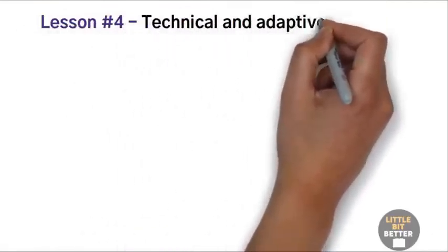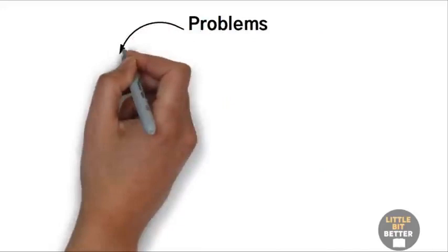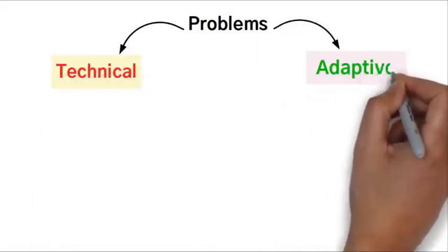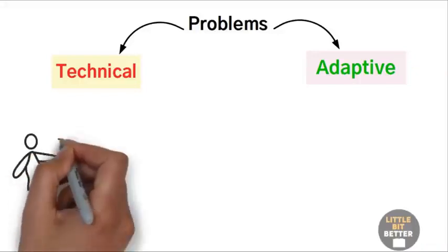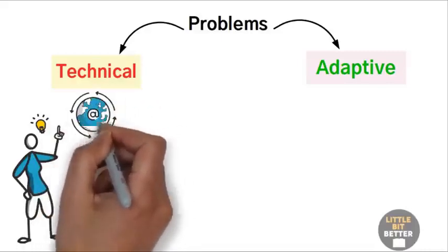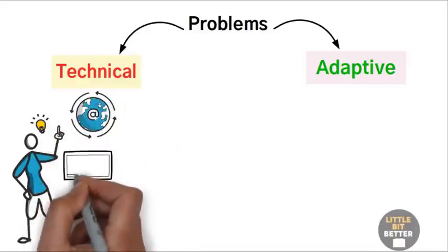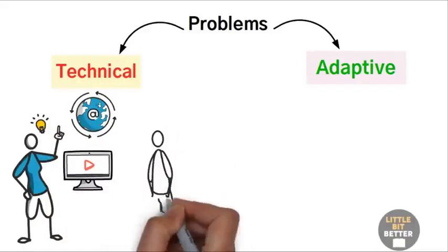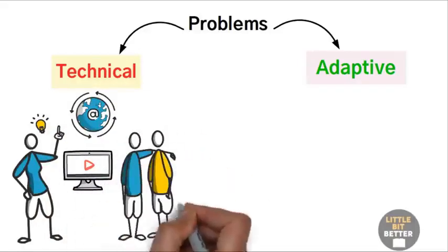Lesson number four, technical and adaptive problems. All business problems can be divided into two categories. Number one, technical problems. Number two, and adaptive problems. Technical problems are problems where the answer is already known. You just need to find out how to do it. For example, if you want to have a website for your business, there are tons of free YouTube tutorials or businesses that can do it for you. With technical problems, you always need to ask, who can do this for me?